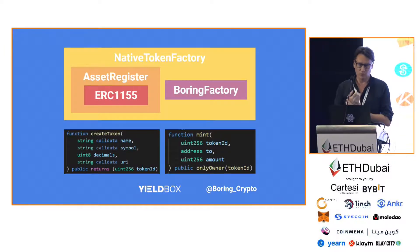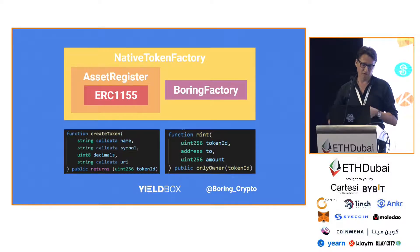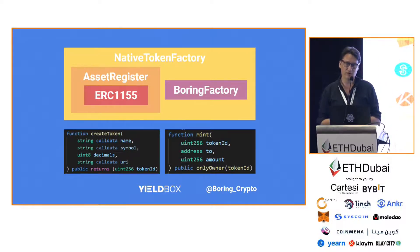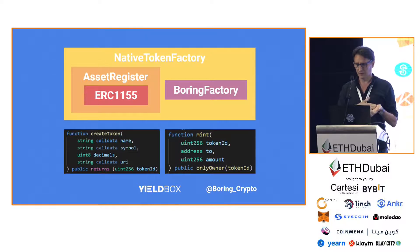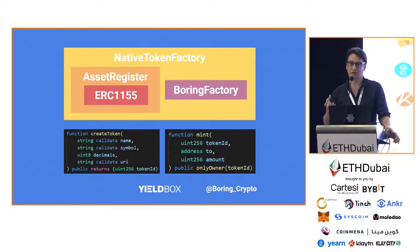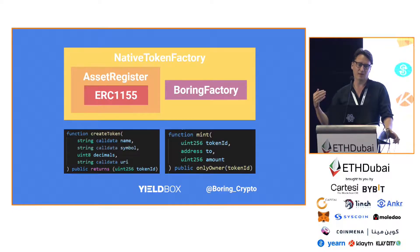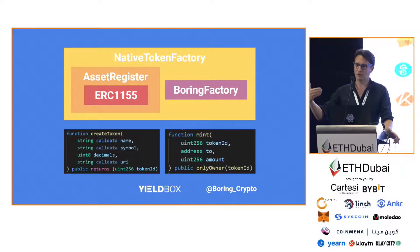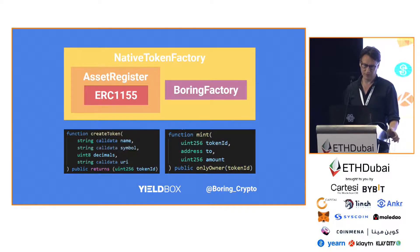Then that gets wrapped into the native token factory — that's the part where you can issue new tokens that your protocol might need. It also includes the boring factory, which is a very simple clone creator. You can get a master contract and create any number of clones from it, and it keeps track of those clones. One of the cool things about that is with approvals: if you approve a certain master contract, you've automatically approved all the clones, which will be very helpful in certain contracts.